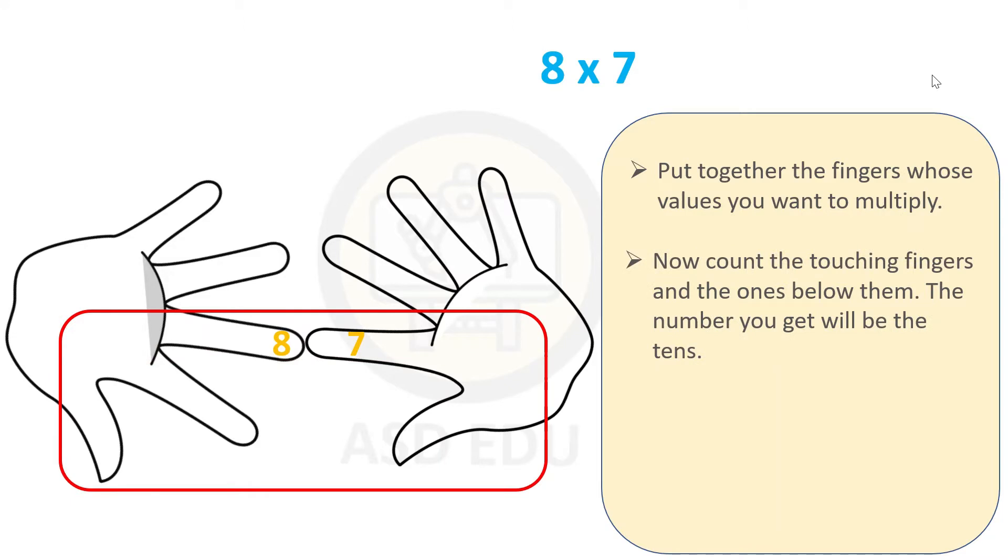Then count the touching fingers and the ones below them. The number you get will be the tens. So we have 3 fingers on the left hand and 2 fingers on the right hand which becomes 5 fingers. That means 50.